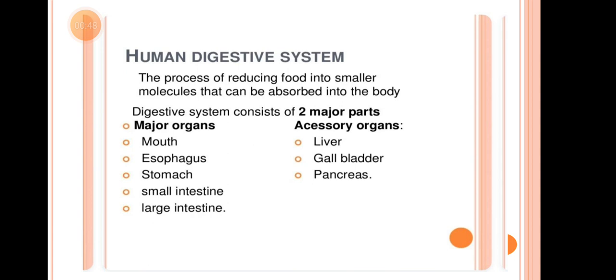This process is the human digestive system, which consists of two major parts. The first is Major Organs and the next is Accessory Organs.